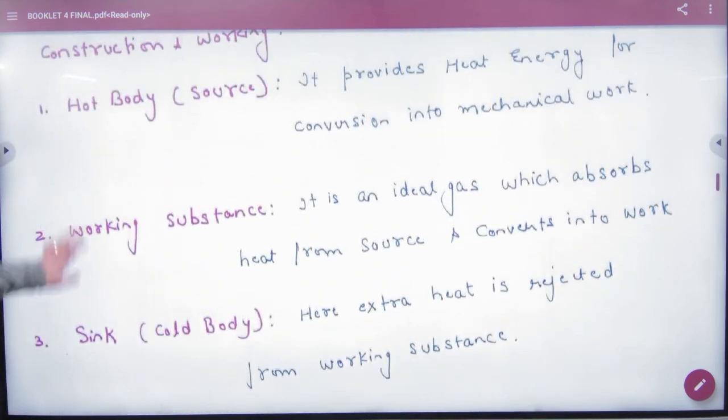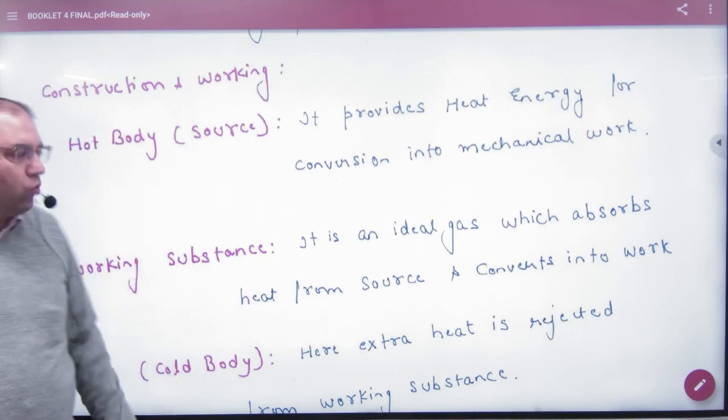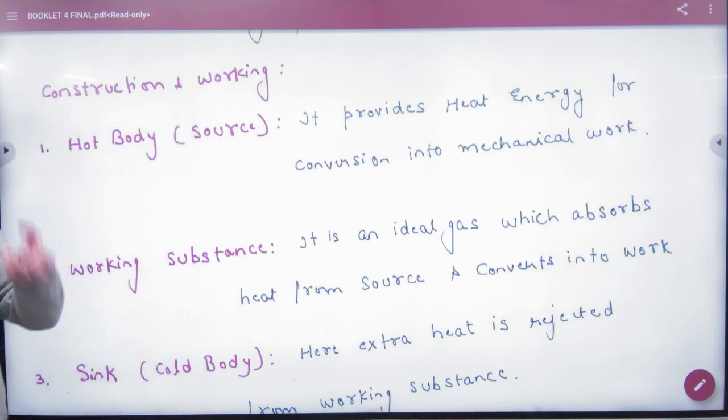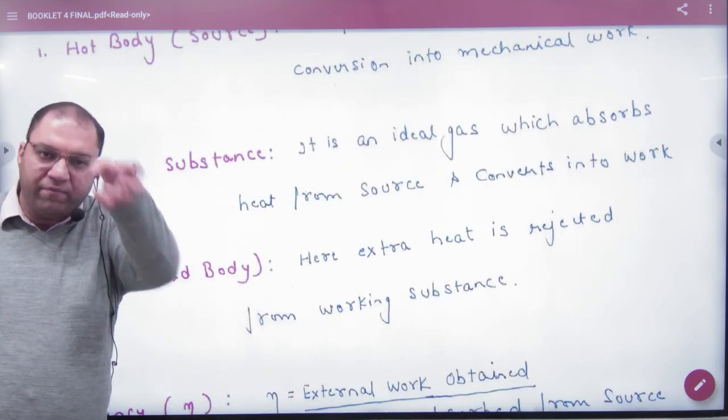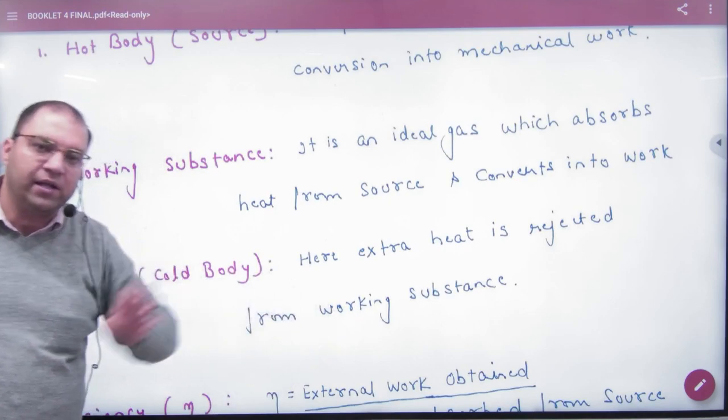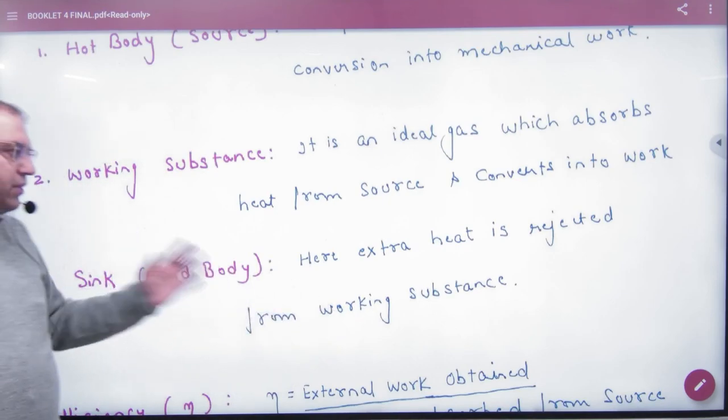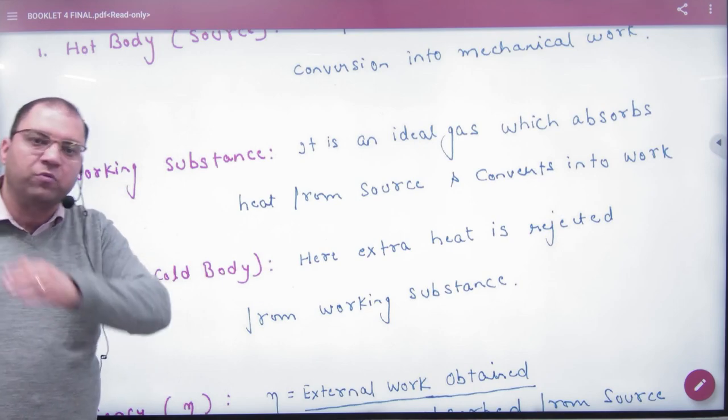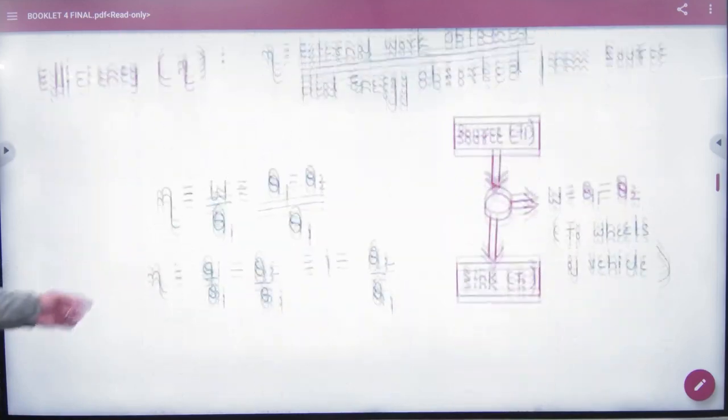So next, what do you need in the construction of a heat engine? One is a hot body which we call source, which will provide energy. One working substance, ideal gas which absorbs heat. So ideal gas is the working substance. And third is the sink. The extra heat adds to the sink. Three things. So this is your basic heat engine.